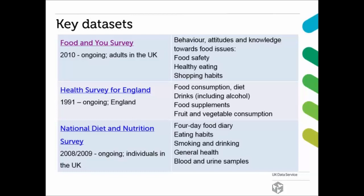The Health Survey for England has information about diets, mainly fruit and vegetable consumption. There are a lot of questions about how many times people eat fruit and veg during the week, whether fresh vegetables, boiled vegetables, and so on. And of course we've got the National Diet and Nutrition Survey, which also has a four-day food diary, eating habits, smoking and drinking, general health, and even blood and urine samples.